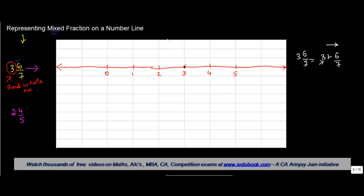This number has to lie on this side, but this number obviously is less than 4, because 6 is less than 7. So when you divide 6 by 7, you will get something which is less than 1.